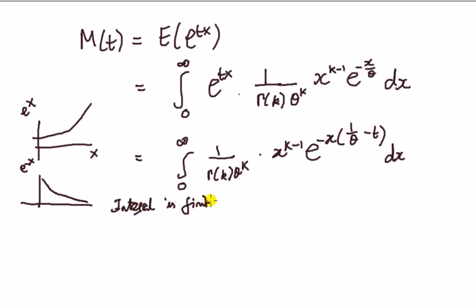This is going to be a number if one over theta minus t is bigger than or equal to zero. It doesn't really matter about strict inequality because it's continuous. Another way of saying this is that t is less than one over theta. So that's the condition. The MGF doesn't necessarily exist unless t is less than one over theta.